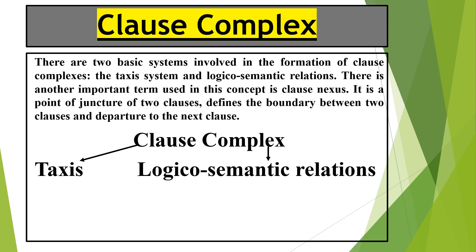There are two basic systems involved in the formation of clause complex. When we combine different clauses through the relationship of taxis or logico-semantics, there are two key systems. This taxis system and logico-semantic system is very important to understand. Other than that, there is one important term used where we combine clauses — that term is called nexus. We call it nexus; it is actually a juncture or point of juncture of two clauses.